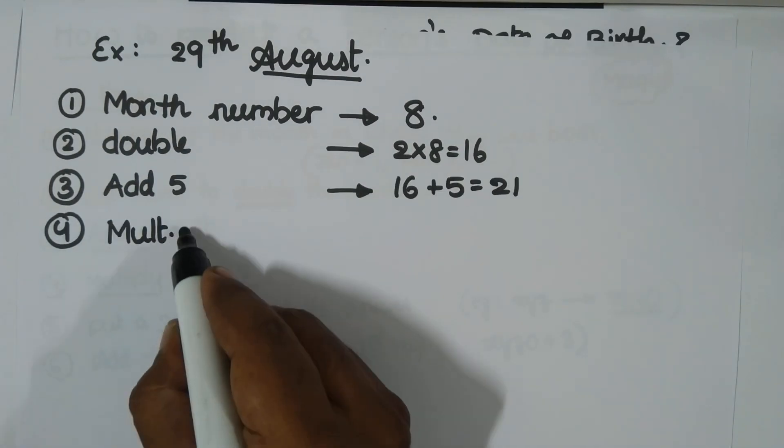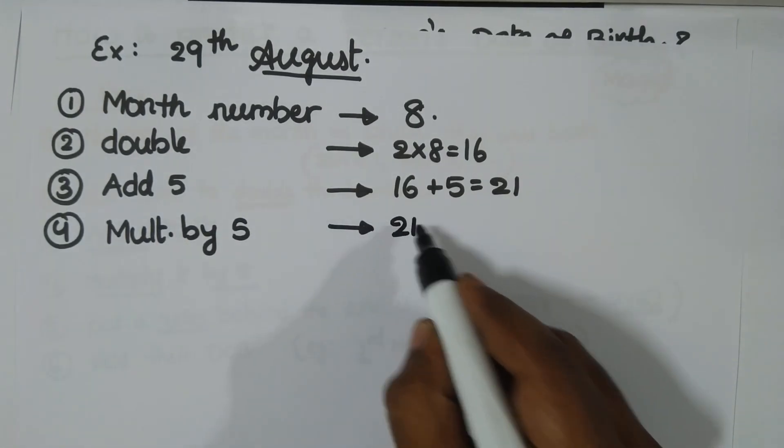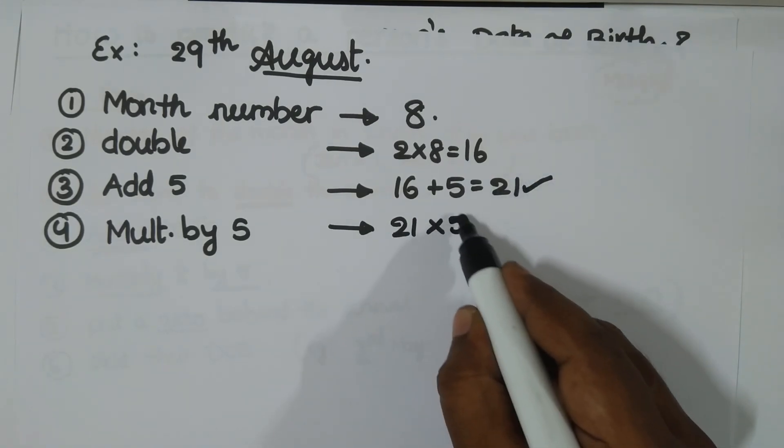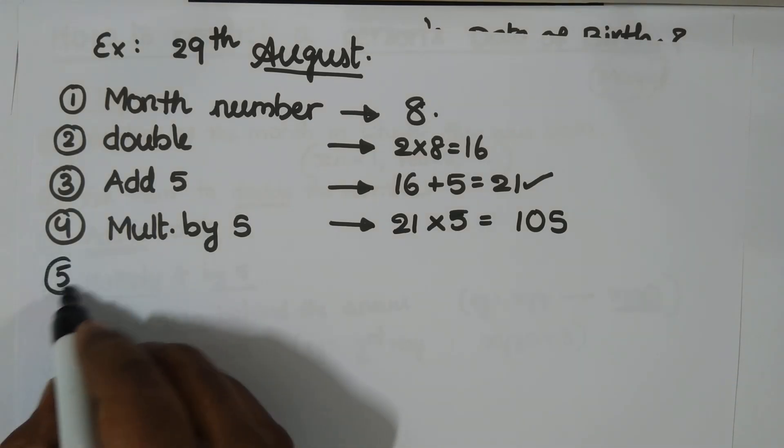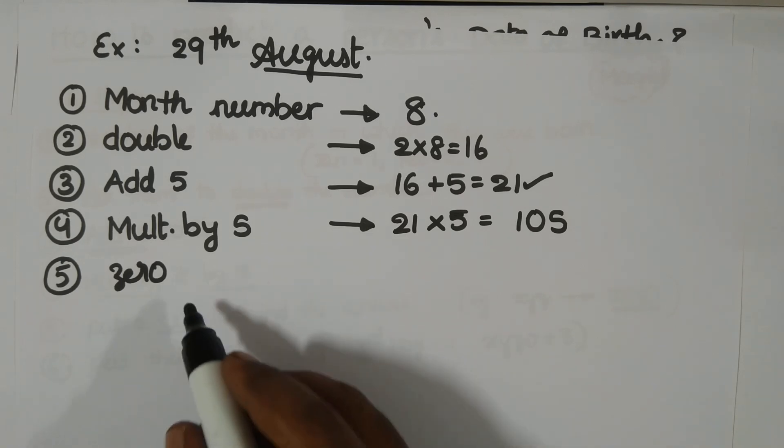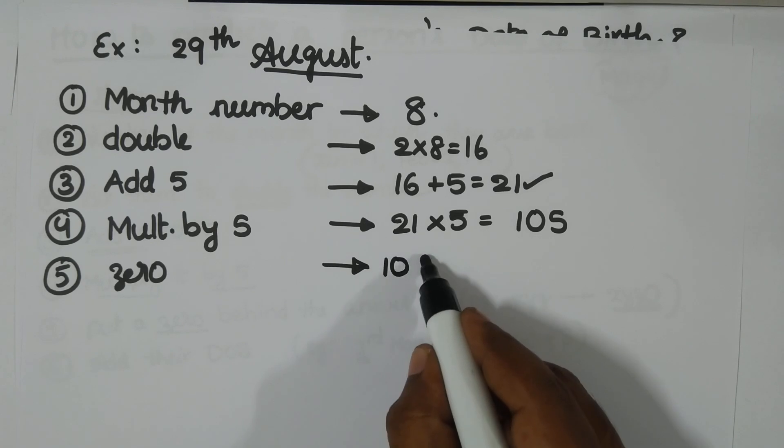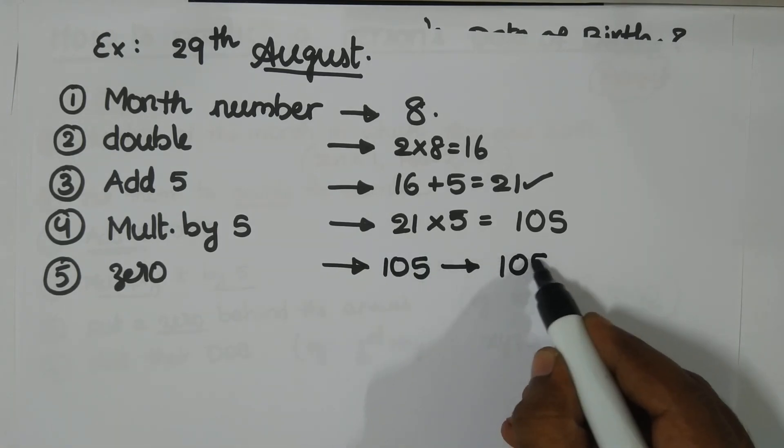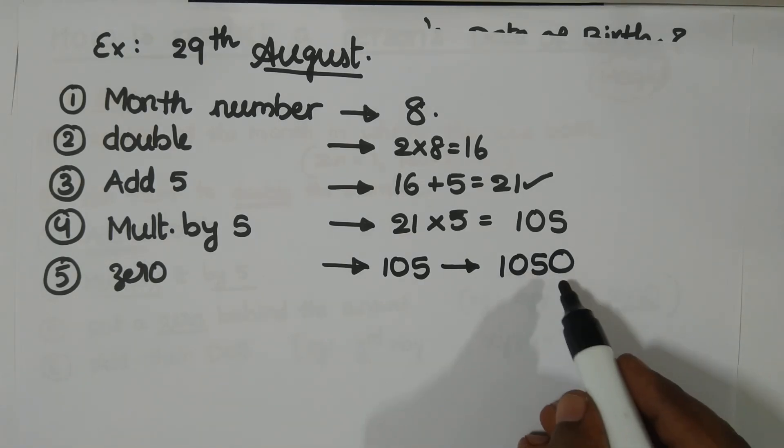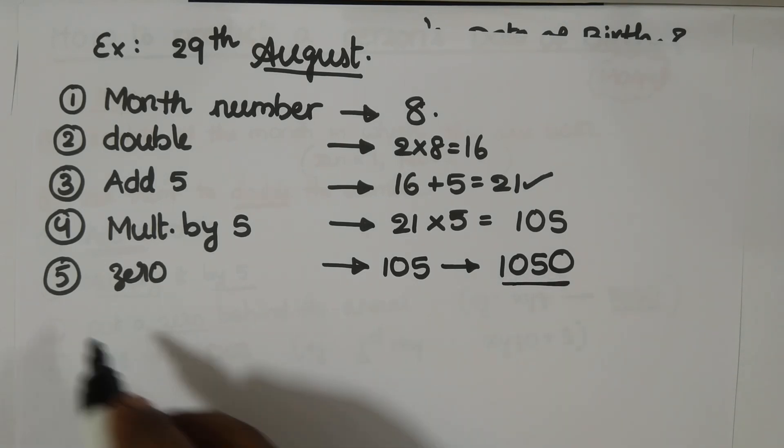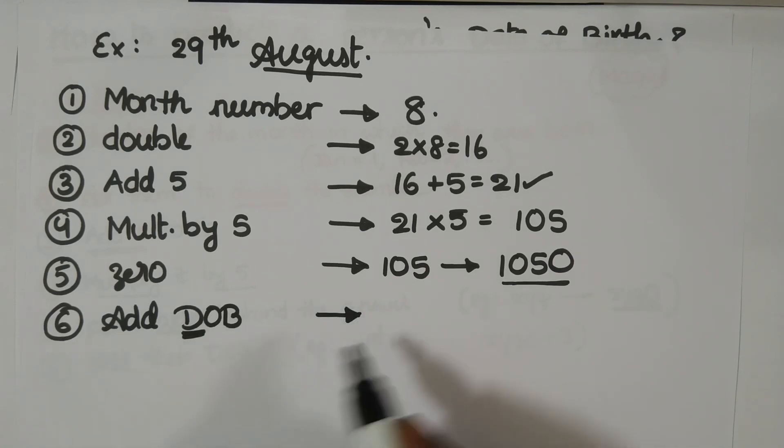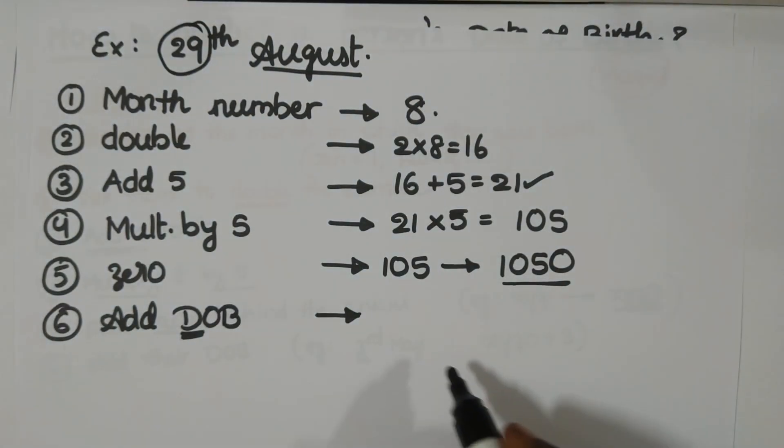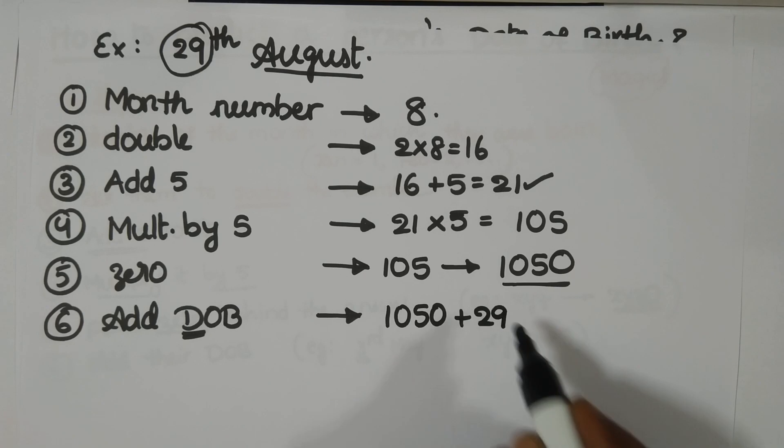And step number five. We have to add zero behind the number obtained in step number four. In step number four, we obtained 105. So now add zero. Append zero on the unit's place. 1050 you have now. Last step is what? Add their date of birth. Add their date. Not month and year, just date. What date do you have here? 29, right? So add. 1050 plus 29. So now what do you have? You have 1079.